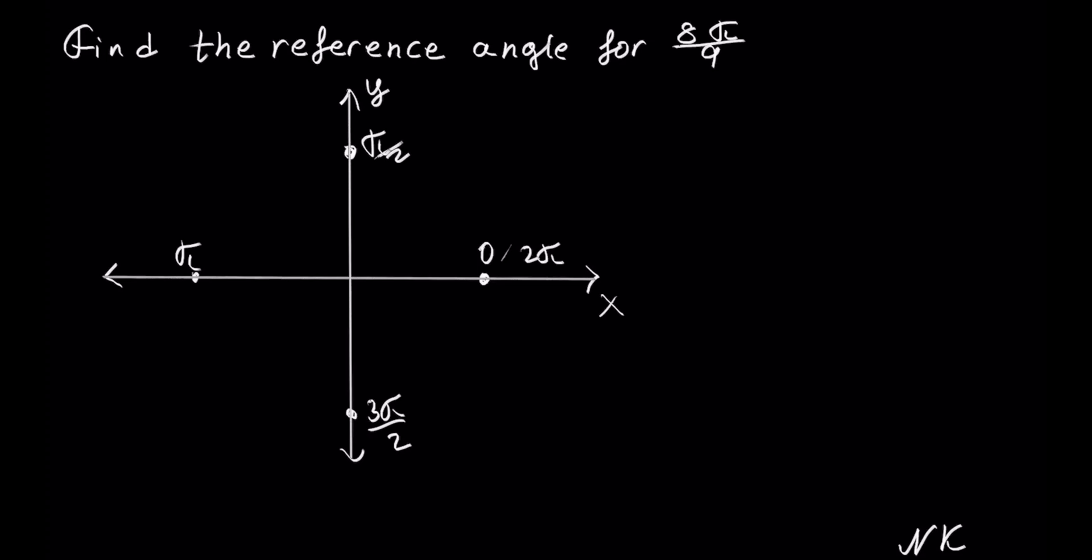So we have a fraction of 8π out of 9. The denominator means into how many pieces the π is being divided into. So let's take 1π on this graph and divide it into 9 equal pieces.